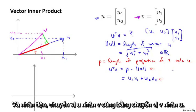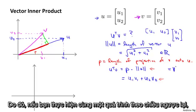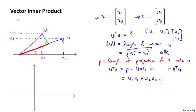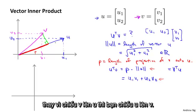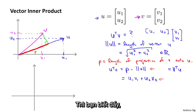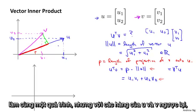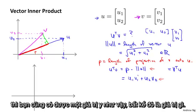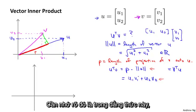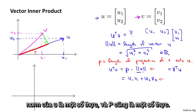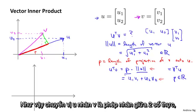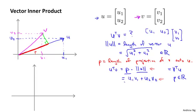By the way, u transpose v is also equal to v transpose u. So if you project u onto v instead, you get the same number. To clarify: the norm of u is a real number, and p is also a real number. So u transpose v is just regular multiplication of two real numbers — the length p times the norm of u.